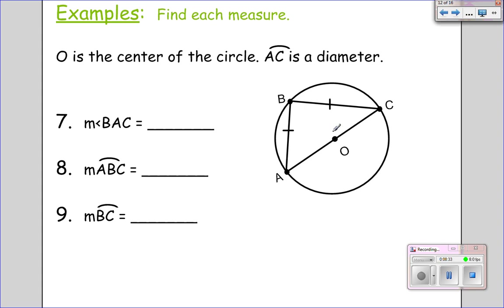O is the center of the circle. AC is the diameter. So this inscribed angle, since its end points are on the diameter, will be 90 degrees. So now we have a triangle here. And it's an isosceles triangle, which makes that 45 and 45. So angle BAC is 45 degrees. Arc A to B to C is half the circle. So that's 180 degrees.